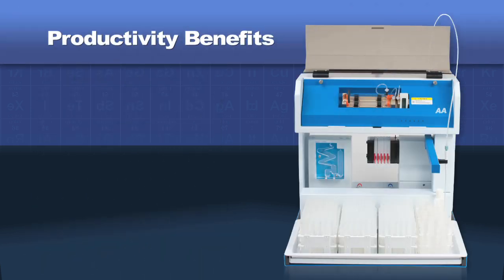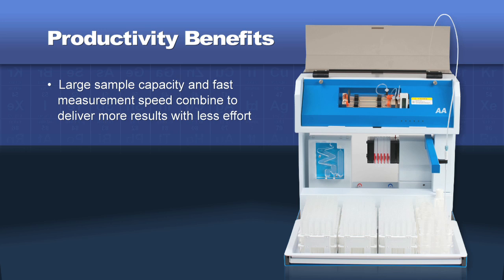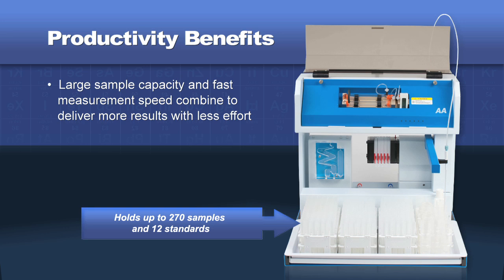The Hydra 2 AA's focus on productivity goes well beyond sensitivity and speed. Here are a few features that help you get more accurate results faster and with less operator interaction. The large sample capacity and fast measurement speed combine to deliver more results with less effort.